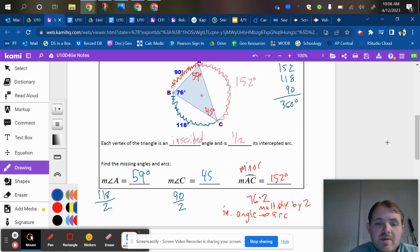And when you go from a minor arc, if you go from an arc to an inscribed angle, you would need to divide by two.